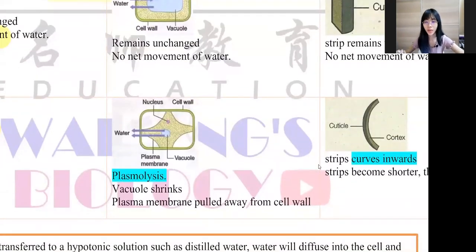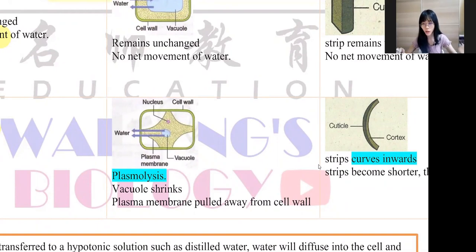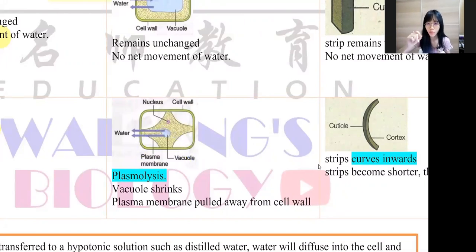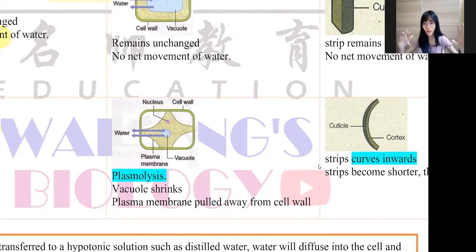Next, hypertonic — lesser water. I'm going to use 20% NaCl, which is sodium chloride, a salt solution. I have 20% salt solution and plant cell. The plant cell has more water, and the salt solution has lesser water, so water diffuses out from the vacuole. The vacuole becomes smaller. The plasma membrane pulls away from the cell wall — we call this plasmolysis.